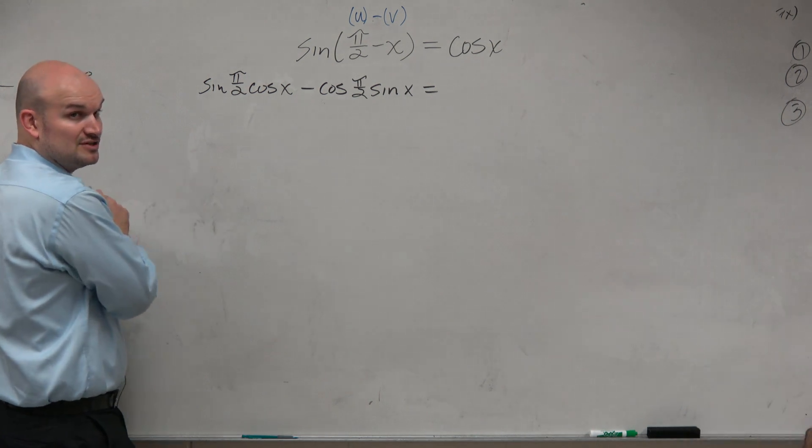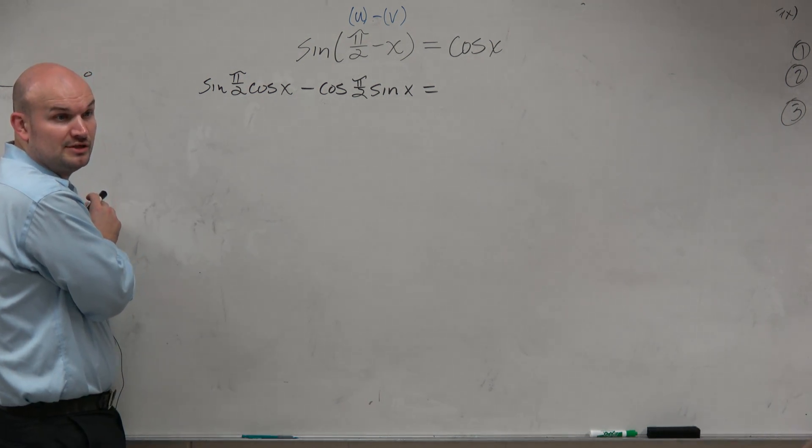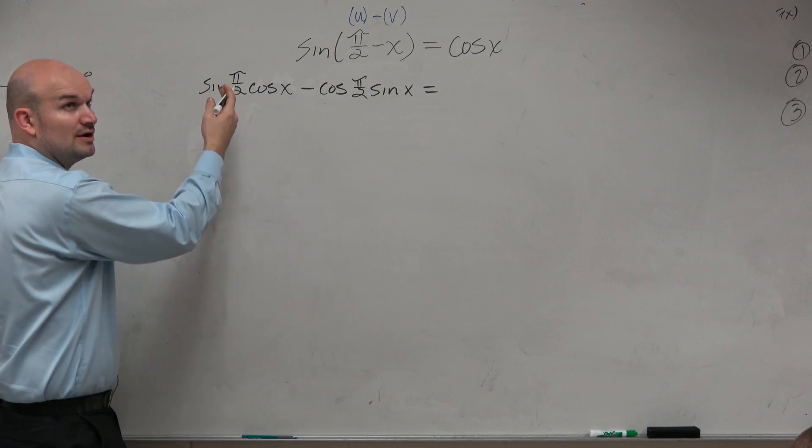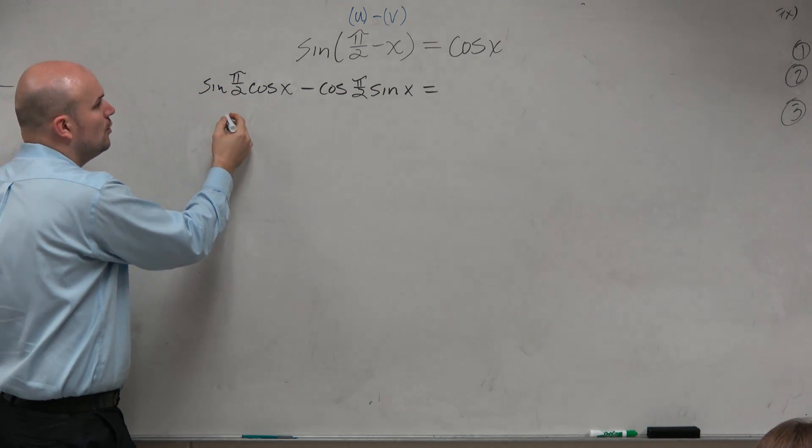As long as we know how to evaluate on the unit circle, we're good. Sine of pi over 2—think of pi over 2, sine is the y-coordinate—that's going to be 1.